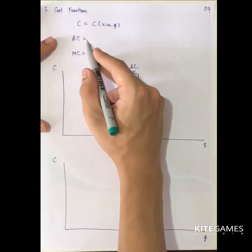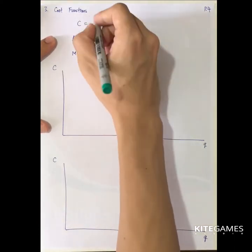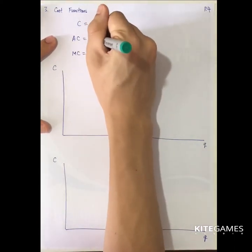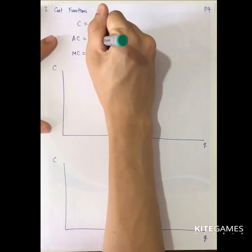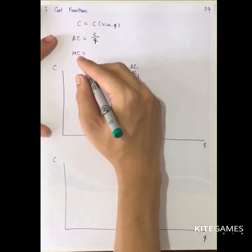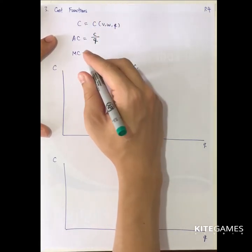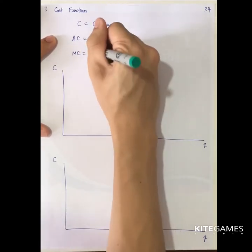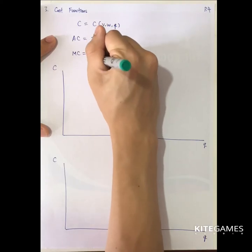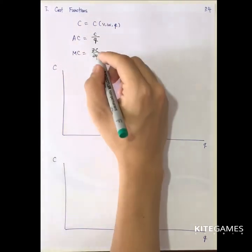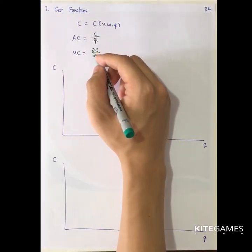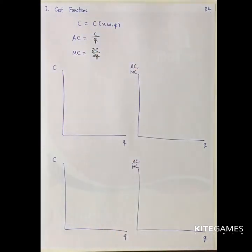The first is the average cost, which is equal to total cost divided by output level. And the marginal cost is partial C over partial Q — the increase in total cost when output increases by one unit.